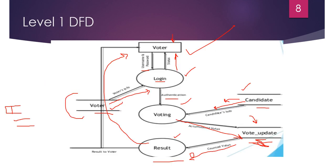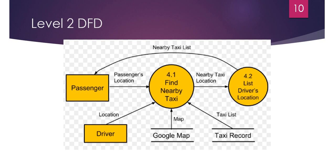Next is Level 2 DFD. Level 2 DFD is better than Level 1 and Level 0 DFD — it provides more details about the system and is more descriptive. This diagram tells you how a passenger will find a nearby driver. If a passenger needs a taxi, this is how they will get it — suppose this is a diagram for a ride-hailing app.